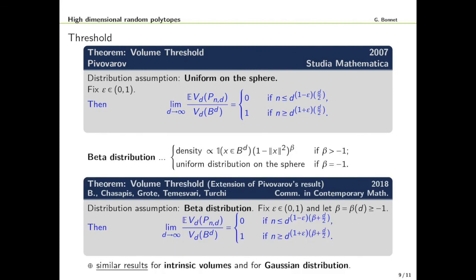In a 2018 paper written with Chassapis, Grote, Temesvari and Turchi we were able to extend this threshold phenomenon to a larger class of distributions which are the beta distributions. This includes the uniform distribution on the ball when you take beta equals zero and the uniform distribution on the sphere when beta is equal to minus one. We have a similar threshold and we have this parameter beta which appears inside the threshold. We are also able to prove similar results for intrinsic volumes and also for the Gaussian distribution.